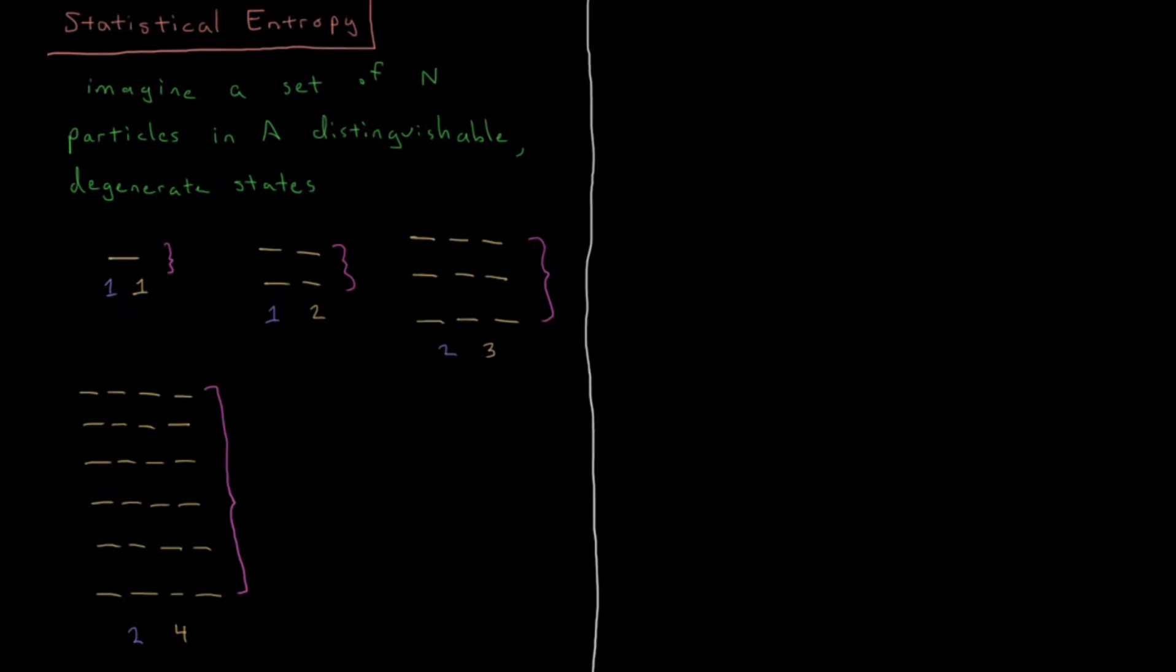In this video we're going to try to understand the microscopic statistical basis for absolute values of entropy. So to do that let's imagine we have a set of N particles in distinguishable degenerate states.